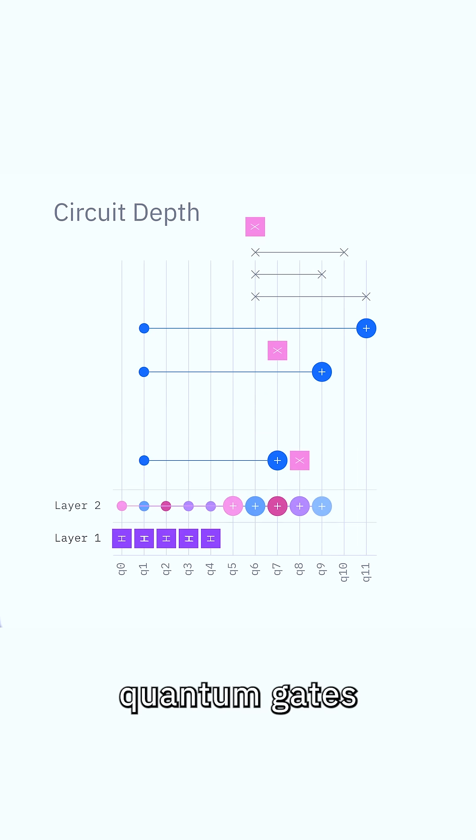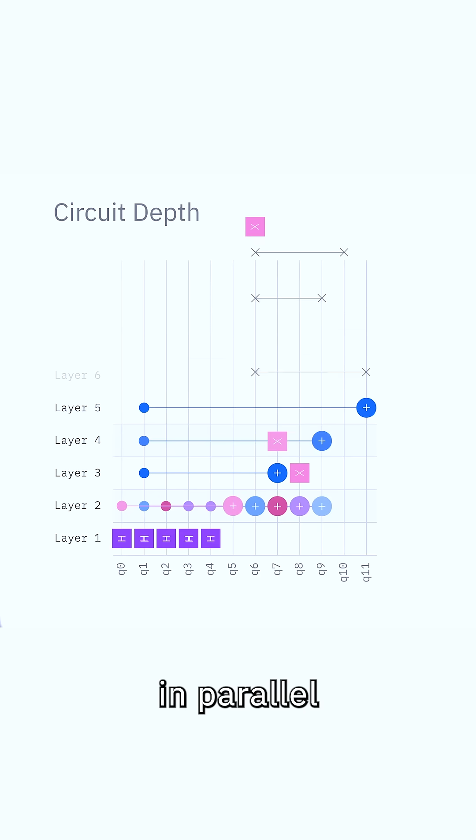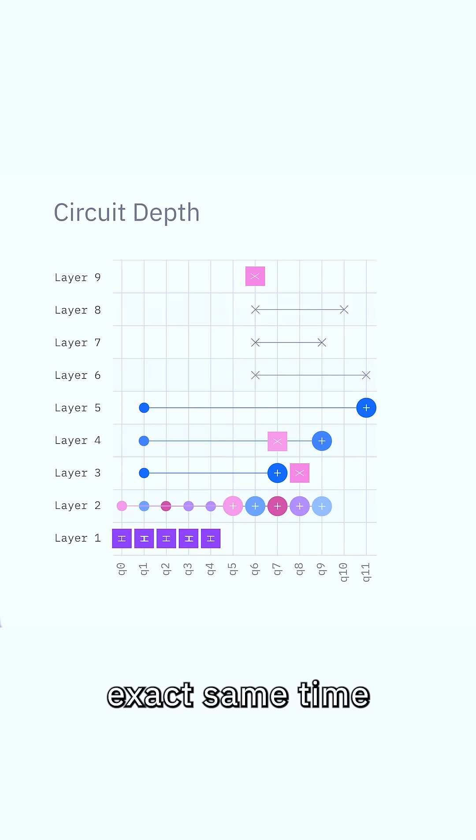To be clear, quantum gates can be executed in parallel, or in other words, at the exact same time, whenever they don't have any qubits in common.